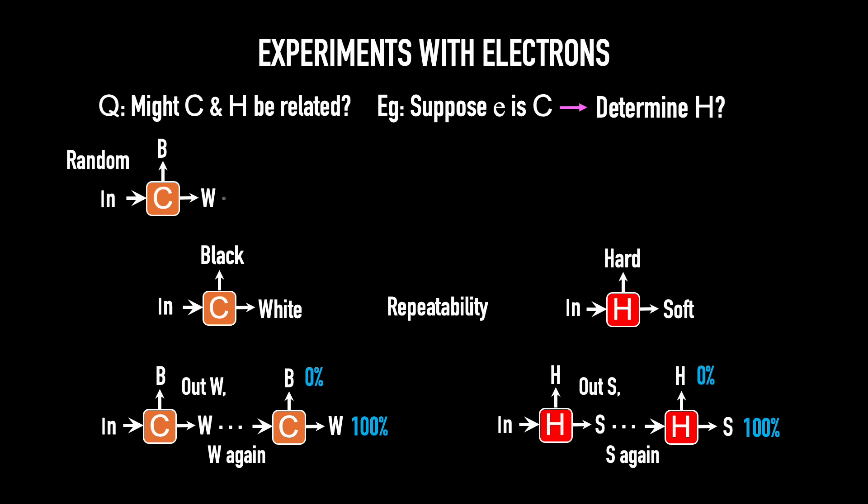I then send these white electrons into a hardness box and see what comes out. What we find is that 50% of the electrons incident on the hardness box come out hard and 50% come out soft. So if you take a white electron and send it into a hardness box, it's even odds. 50% hard, 50% soft. And ditto in reverse, if you take a soft electron and send it into a color box, you again get 50-50, even odds, 50% black and 50% white. So knowing the color does not give you any information about the hardness, and knowing the hardness does not give you any information about the color. These are independent facts, independent properties. So no, they're not correlated.